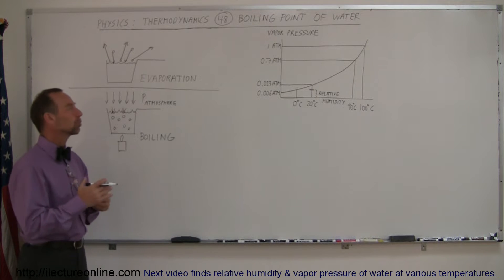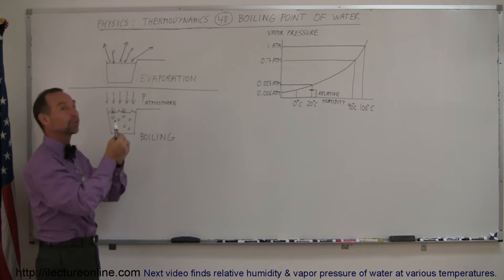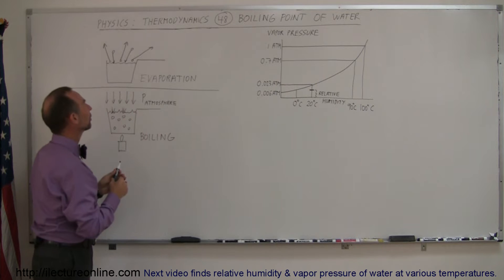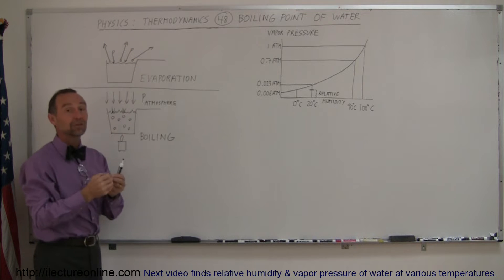Evaporation is simply an interaction between the atmosphere and a source of water. For example, let's say we have this pot of water right here. At all times molecules are jumping free from the surface into the atmosphere, and at the same time molecules from the atmosphere are coming down and entering into the water.